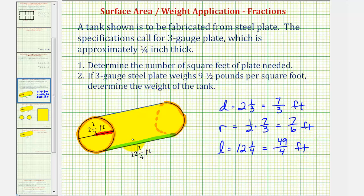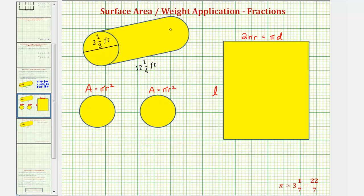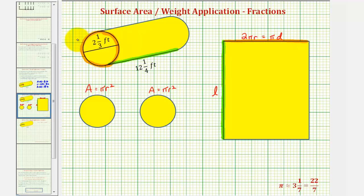So now we want to find the surface area of this tank. To do this, we're going to cut this tank into three pieces to better visualize how to find the surface area. Both ends of the tank are circles, and the area of a circle equals pi r squared. If we cut the tank along its length and unfold it, it would form a rectangle where one side is the length of the tank and the other side comes from the circumference of the circle, given by two pi r, or equivalently pi times d. For pi, we're going to use the fraction twenty-two-sevenths as an approximation.